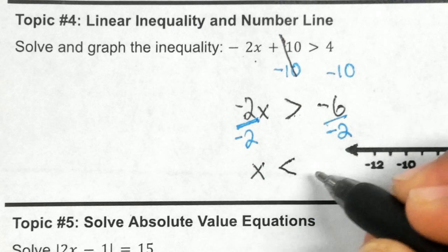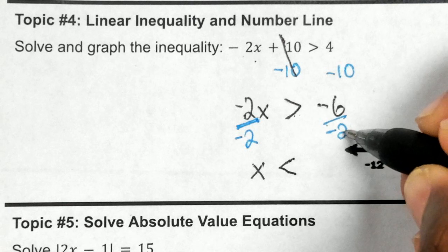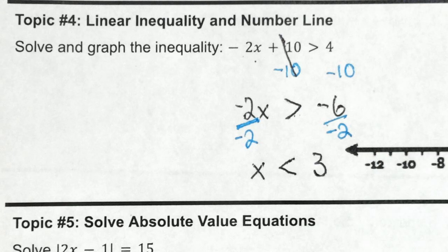We would have x is now going to be less than. Negative 6 divided by negative 2 is a positive 3.